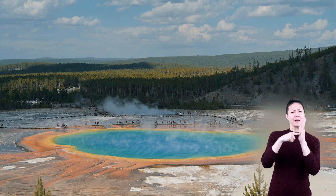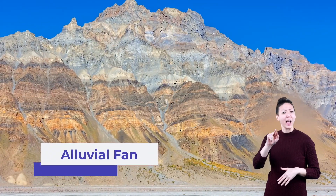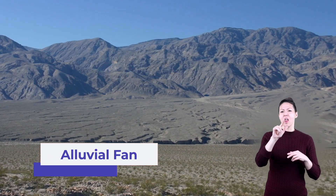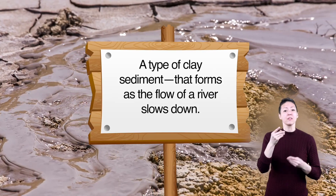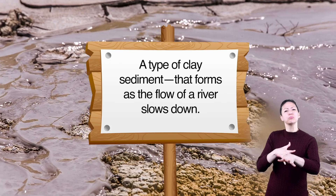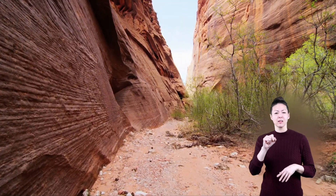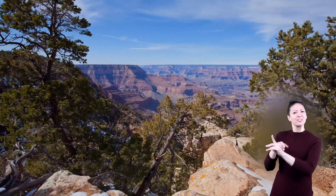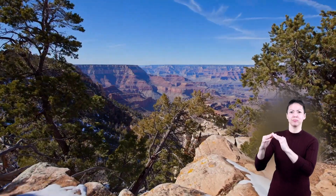For instance, have you heard of an alluvial fan? This is a fan-shaped mass of alluvium, a type of clay sediment that forms as the flow of a river slows down. Like alluvial fans, other landforms are shaped by nature too, and can take thousands or even millions of years to form.